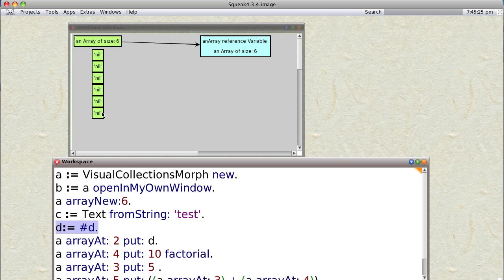So let's make d equal to the symbol d, and now you see where this code here puts the value d into the second slot of the array.